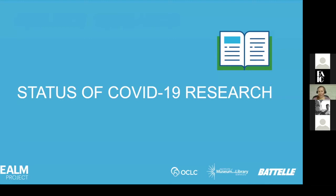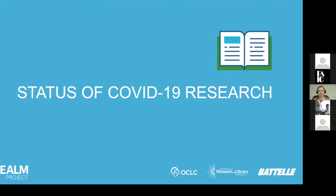There have been three literature reviews conducted during the project so far. One was just published in February, last month. The three questions we looked at were: how might the virus spread through general operations in libraries, archives, and museums; and while we didn't expect to find anything specific to LAMs in the published literature, we were looking to see what might be applicable and how we can transfer what other people are learning about public spaces.